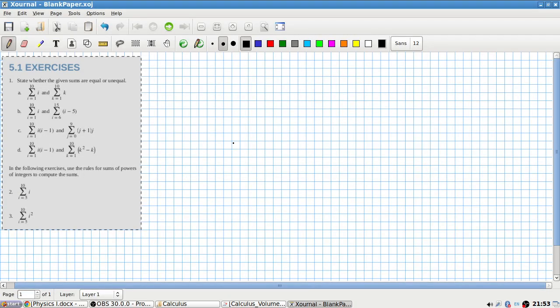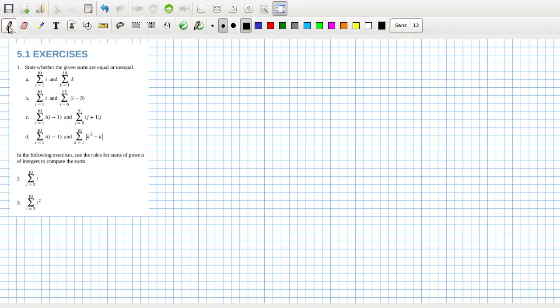Okay, let's get started. State whether the given sums are equal or unequal. The i and k are just dummy variables so they're equal. This one starts at one, goes to ten. This one here, six minus five is one and minus five is ten, so that's equal. That's i squared minus i.